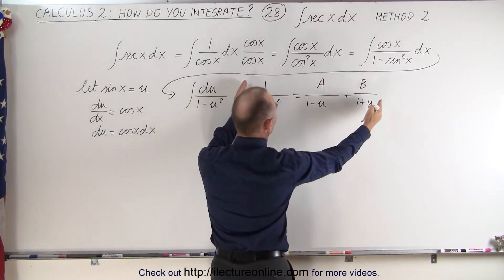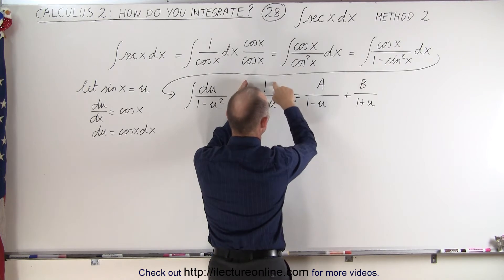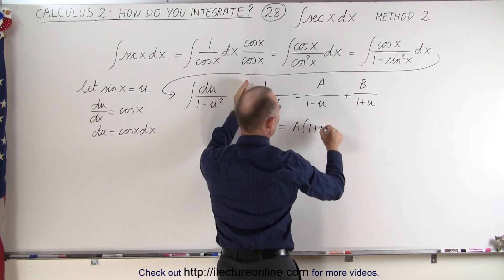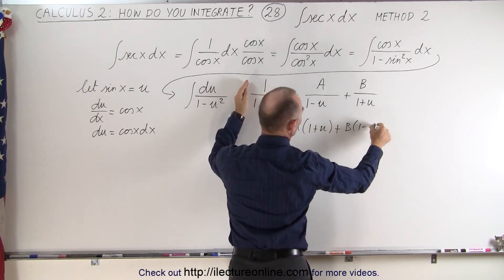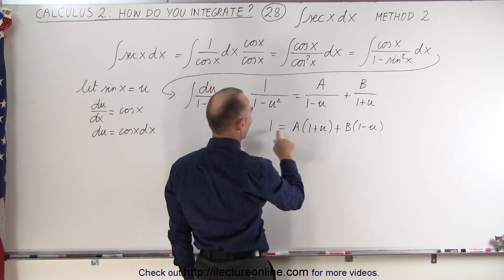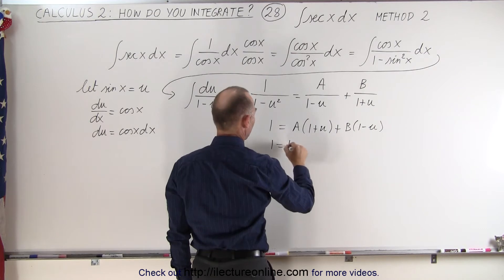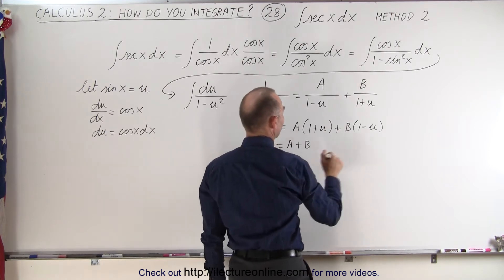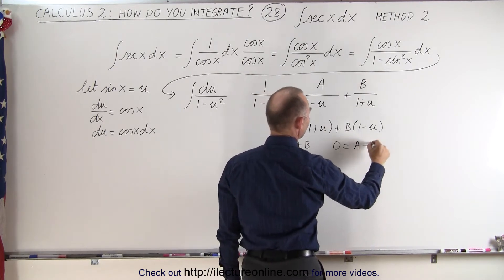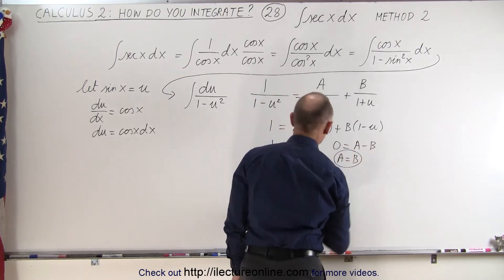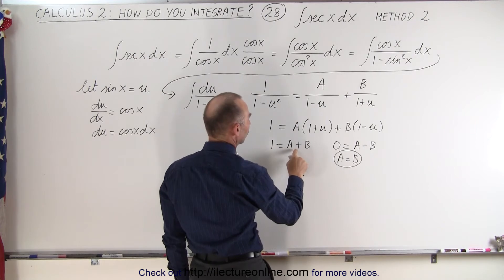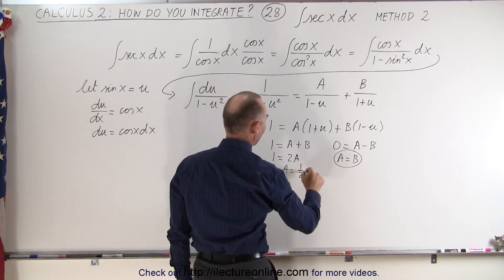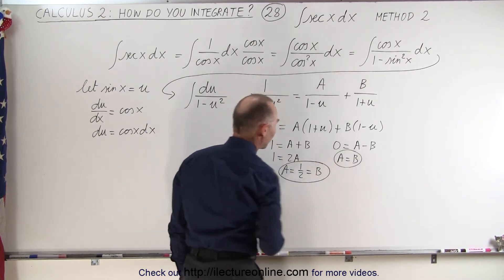If we multiply both sides of this equation by 1 minus u squared, this becomes 1 in the numerator. So we have 1 equals A times (1 plus u) plus B times (1 minus u). That means 1 equals A plus B, and since there's no u on the left side we can say 0 equals A minus B, which means A equals B. So 1 equals 2A, which means A equals 1/2, which is also equal to B.